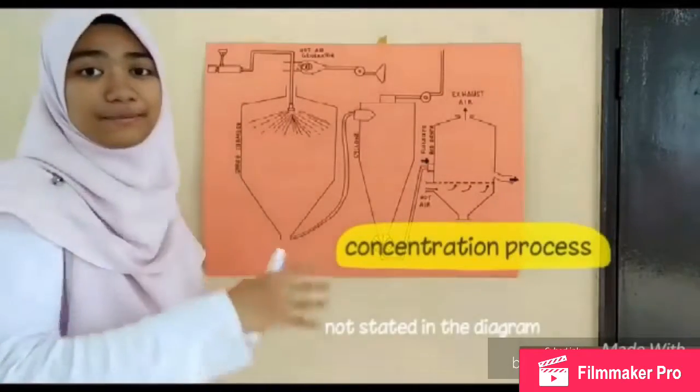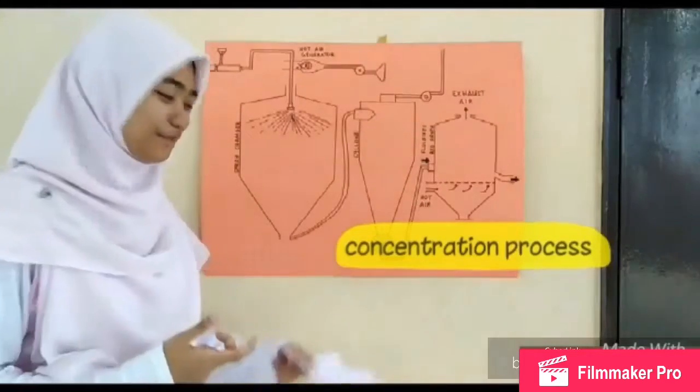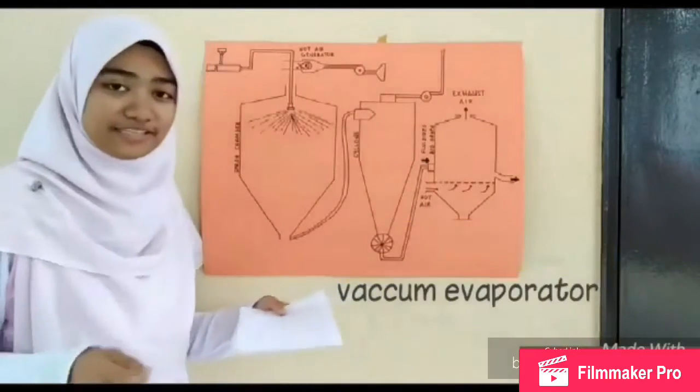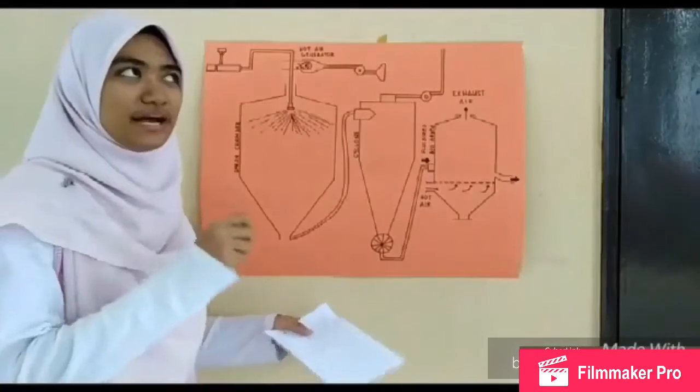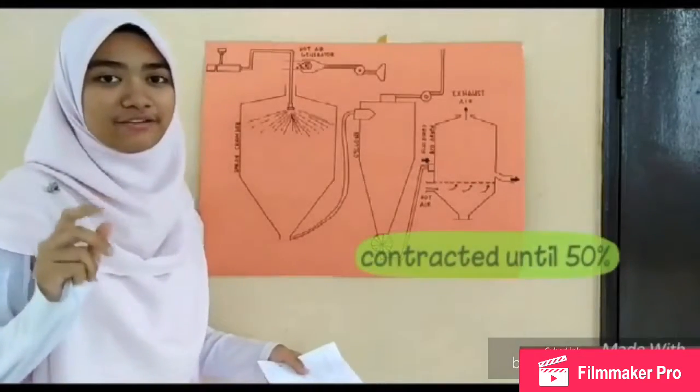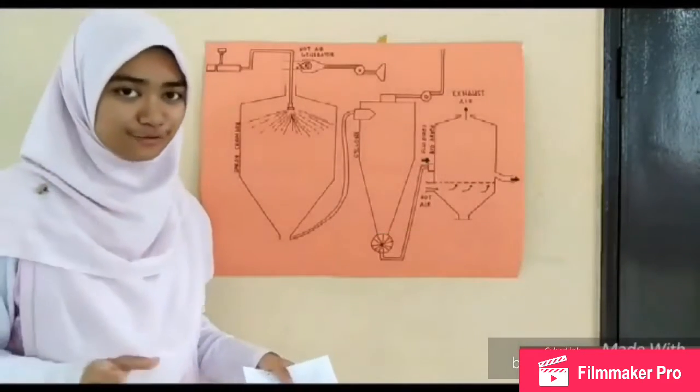The concentrating process will speed up the drying process. We will use a vacuum evaporator to concentrate up to 50% concentrated sour soup juice.